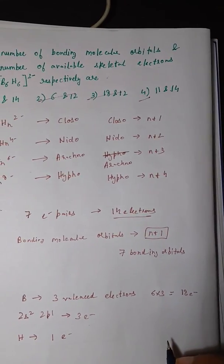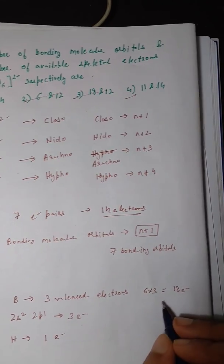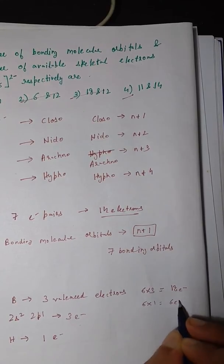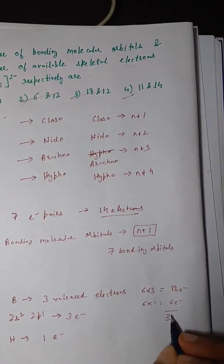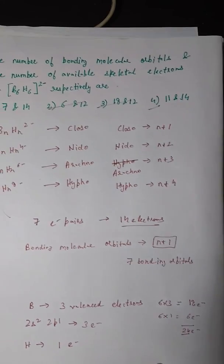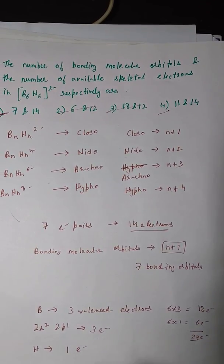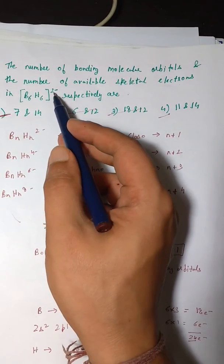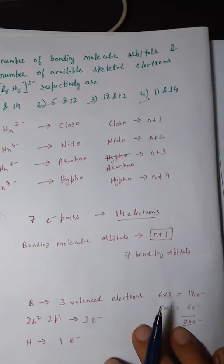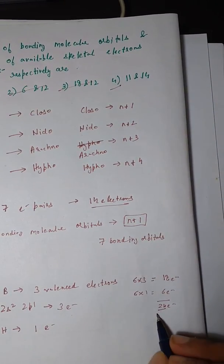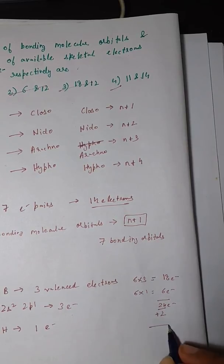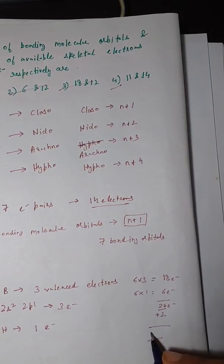There are also six hydrogens contributing 6 × 1 = 6 electrons. Adding those gives 24 electrons. The cluster has a 2− charge, meaning two additional electrons, so the total number of electrons is 24 + 2 = 26 electrons.